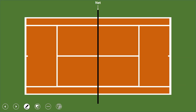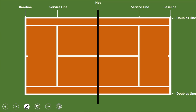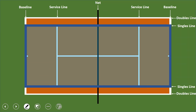Now let's talk about the tennis court. There's a net in the middle which divides it into two parts: your area and your opponent's area. There's a baseline you need to hit within, a service line you need to serve between, doubles lines used in doubles play, and singles lines — the only area used in singles. The rest of the area is ignored in singles.